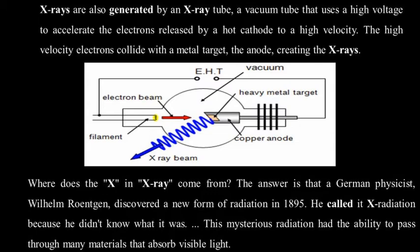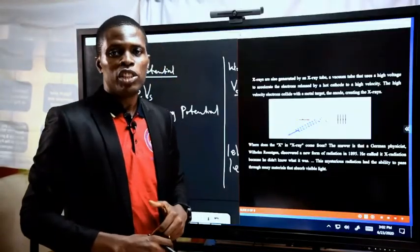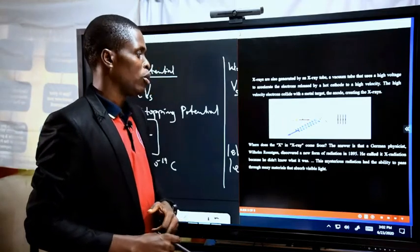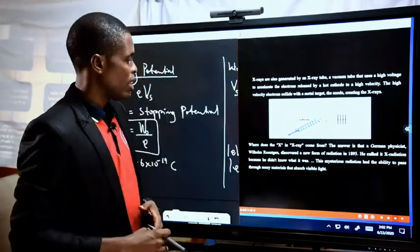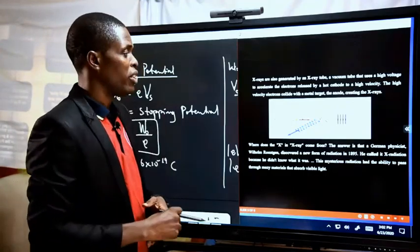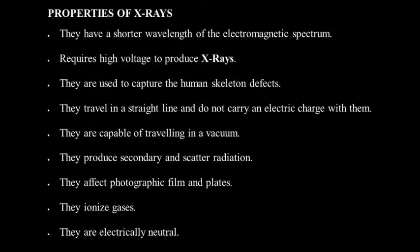The name X-ray came from the fact that the discoverer could not give it a particular name, so he called it X-radiation — X meaning unknown — because the nature and properties of the rays were initially unknown. With time, we were able to discover that X-rays have many properties, and the name X-ray was given to it as a ray with a shorter wavelength of the electromagnetic spectrum.